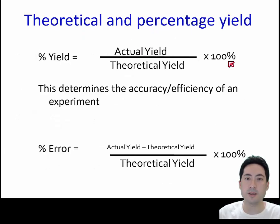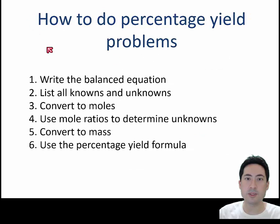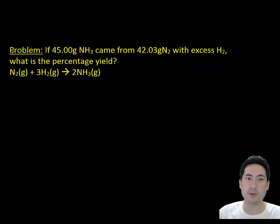The first one here is to calculate how much we should have got. We call that percent yield, or we can use percent error as a similar calculation. We use the balanced equation and work out the theoretical—how much we should have got—and then we can compare it with that formula.